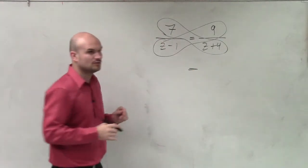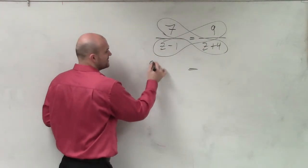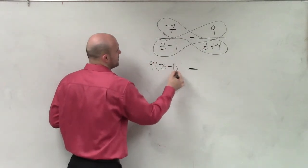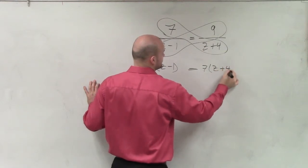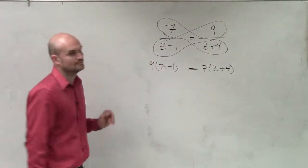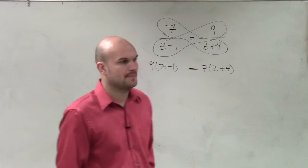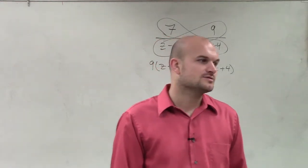Again, I keep my equal sign. So on this side, I have 9 times z minus 1 equals 7 times z plus 4.